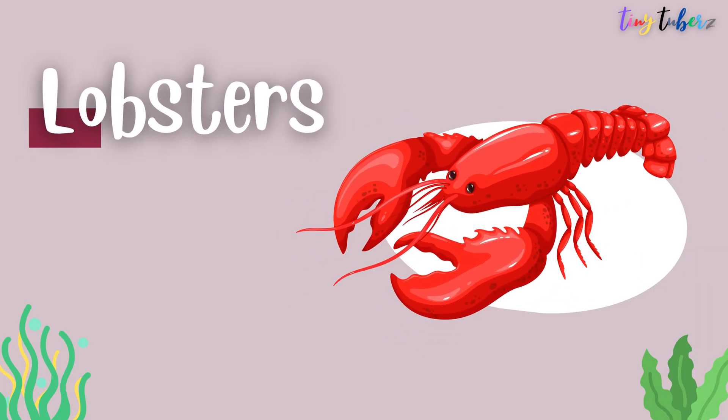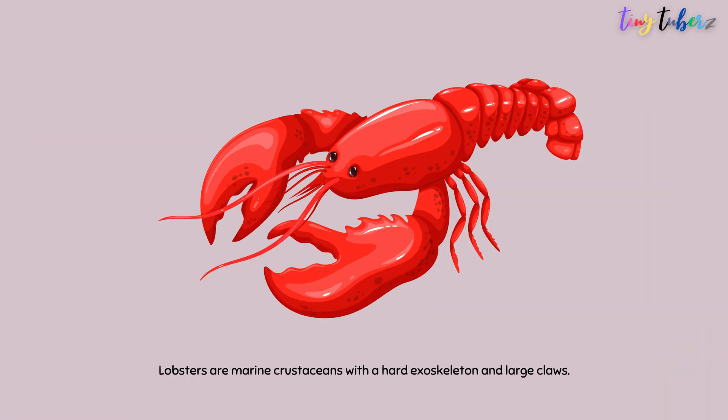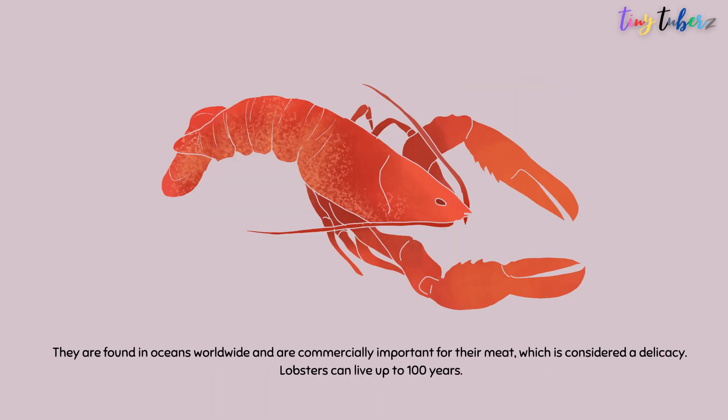Lobsters are marine crustaceans with a hard exoskeleton and large claws. They are found in oceans worldwide and are commercially important for their meat, which is considered a delicacy. Lobsters can live up to 100 years.